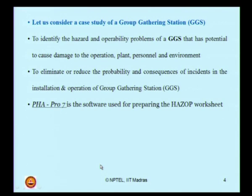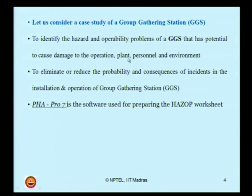I want to take you through a case study for which we will prepare an HAZOP report. This is an application problem of a group gathering station. In this study, I have identified a group gathering station and tried to locate the hazard and operability problems, because a GGS in general has potential to cause damage to operations, plant, personnel, and environment. The objective is to eliminate or reduce the probability and consequences of incidents.